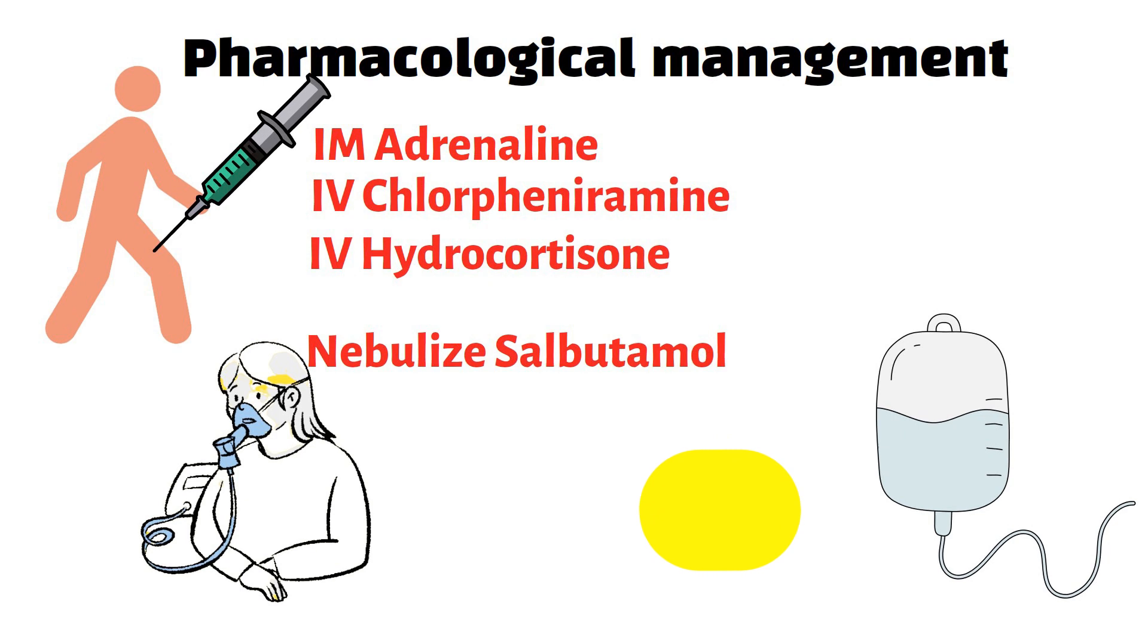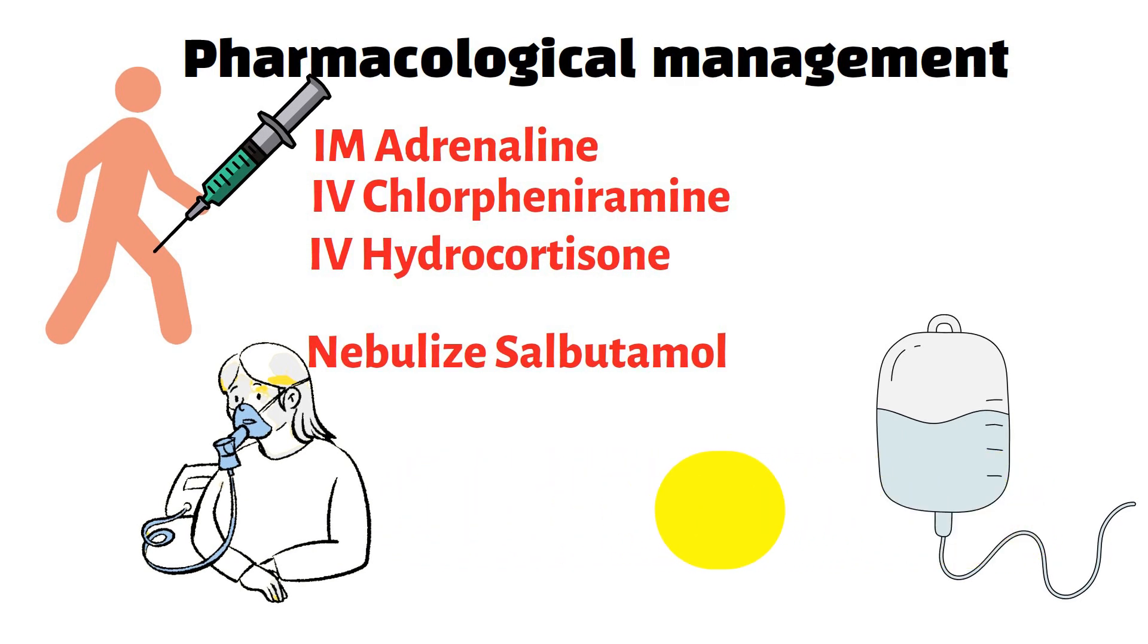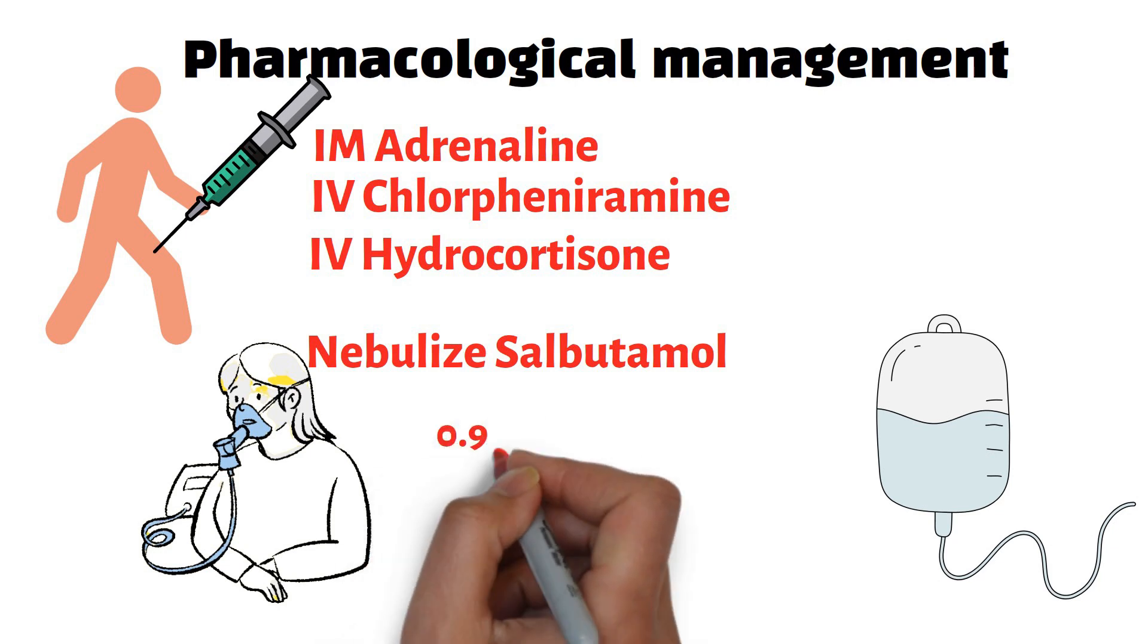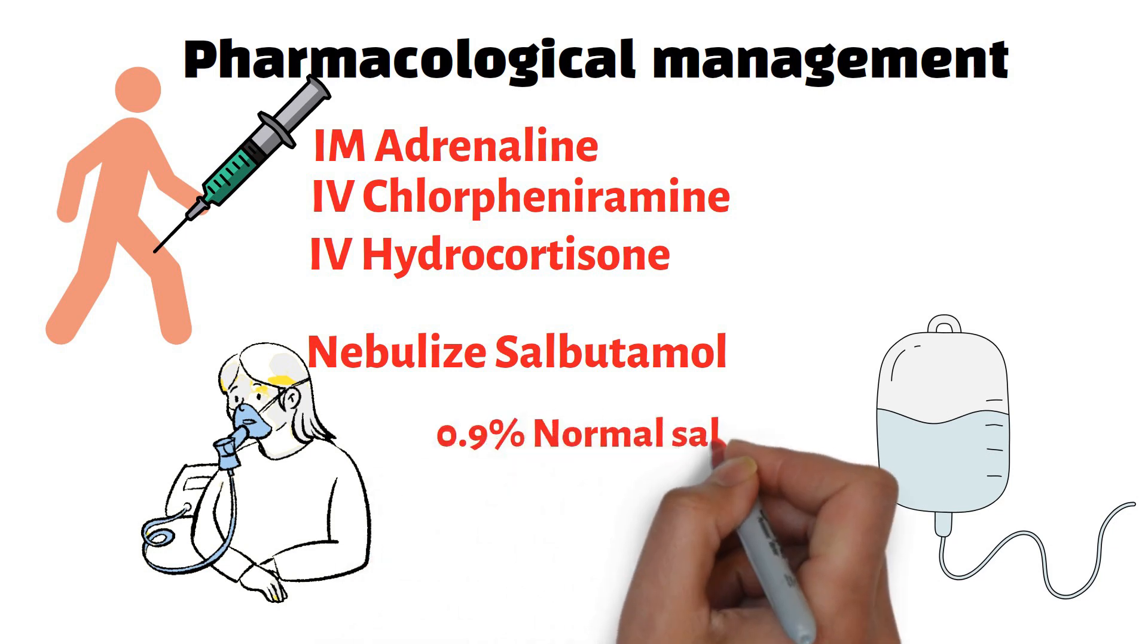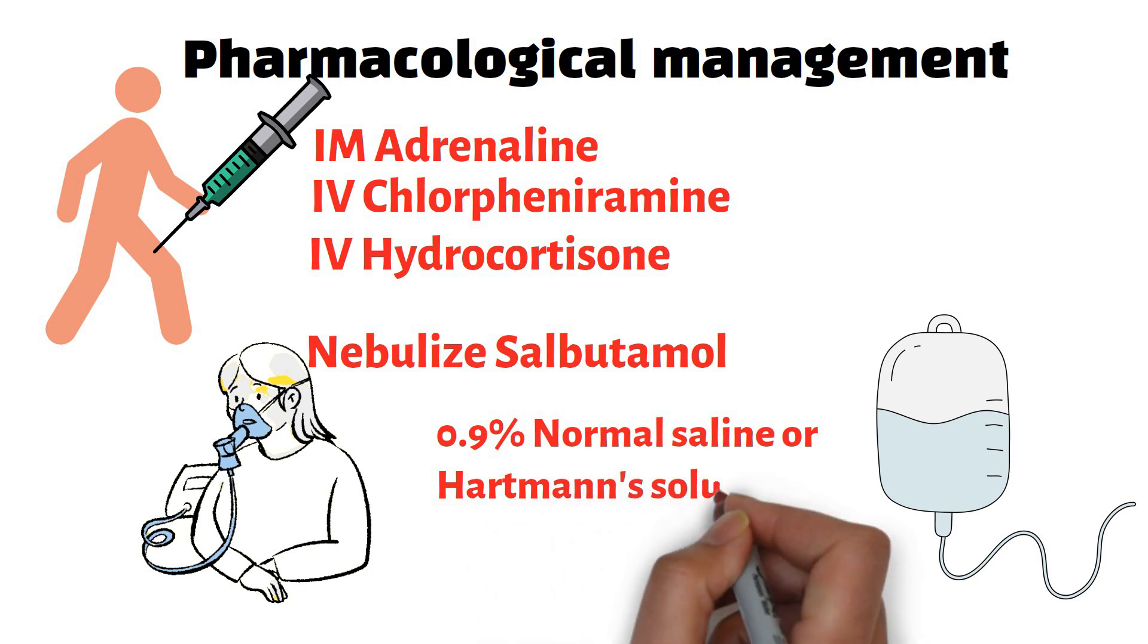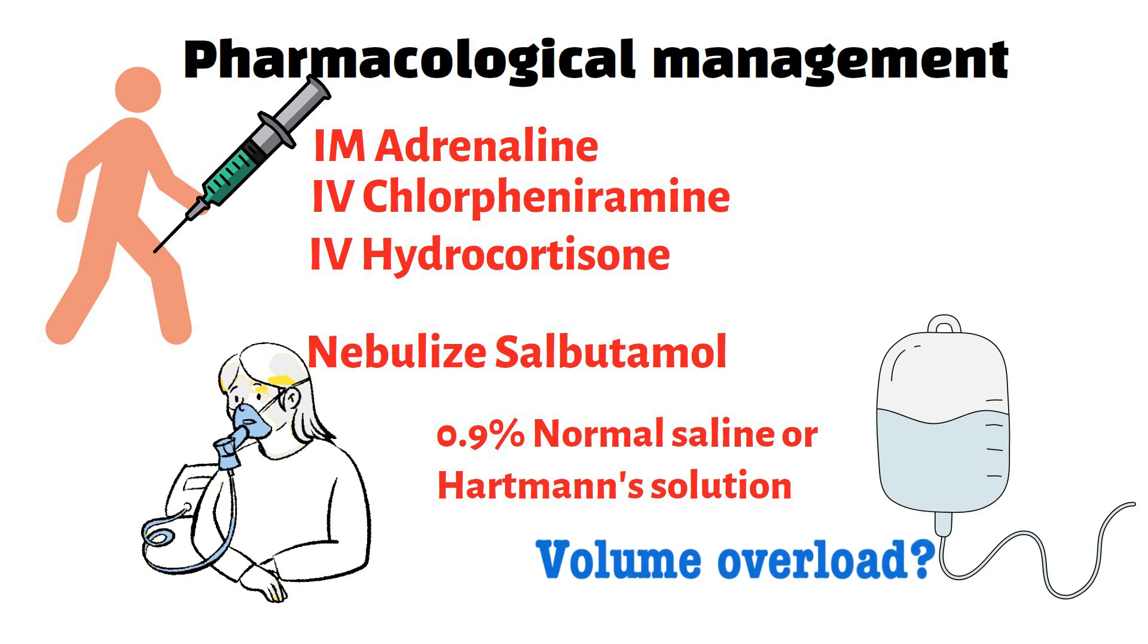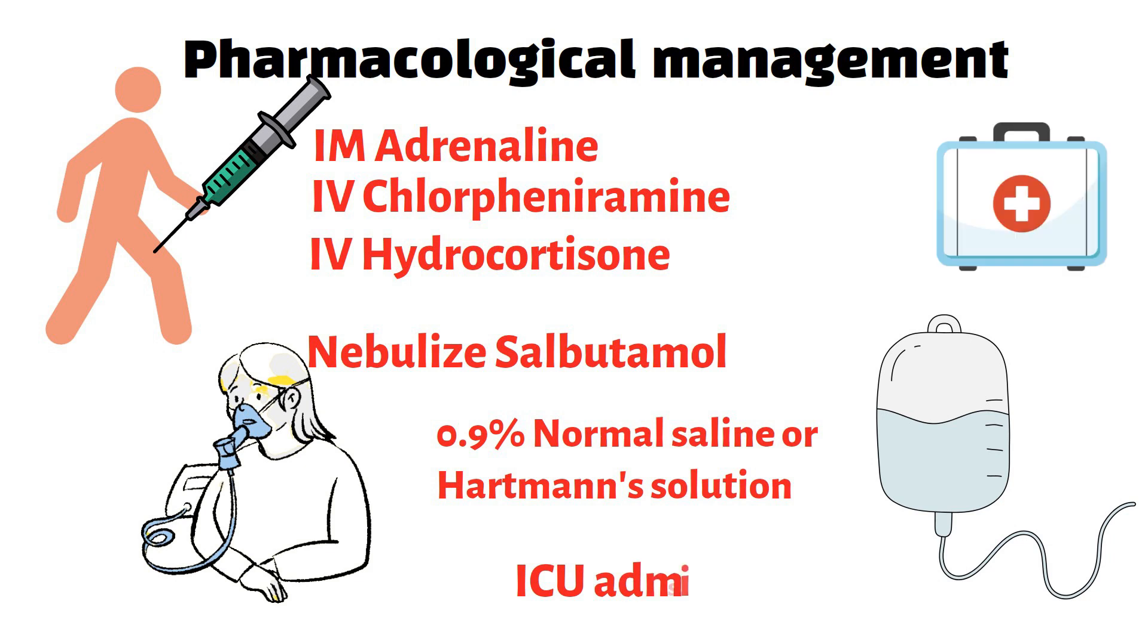Fluid resuscitation is done in all patients. A rapid infusion of 500 milliliters 0.9% normal saline or Hartmann's solution is given intravenously over 15 minutes—we can give it up to 2 liters. This rate should be titrated against the blood pressure, heart rate, and urine output. Monitor this patient for volume overload, and if the patient is still hypotensive and unstable, quickly consider ICU admission.